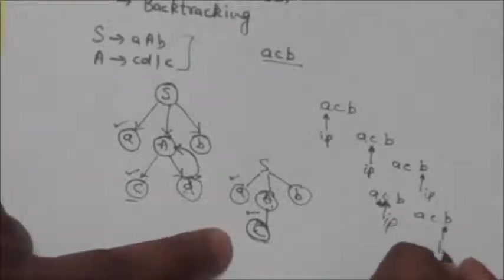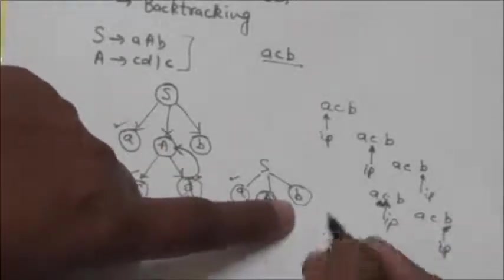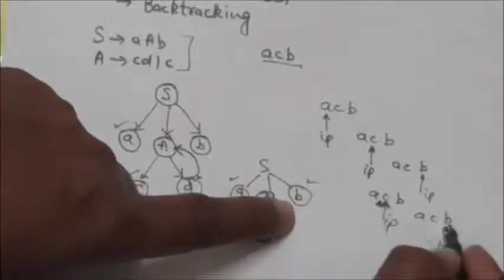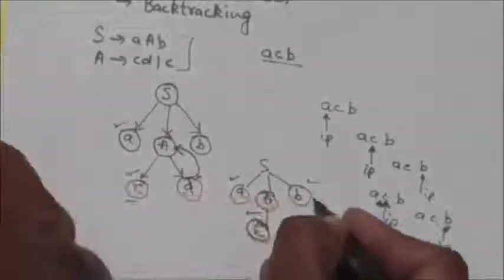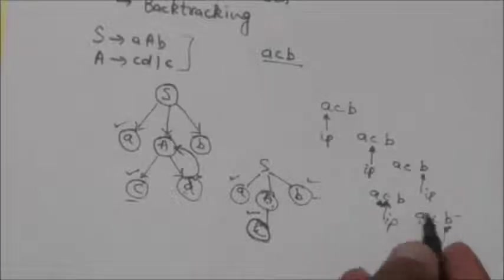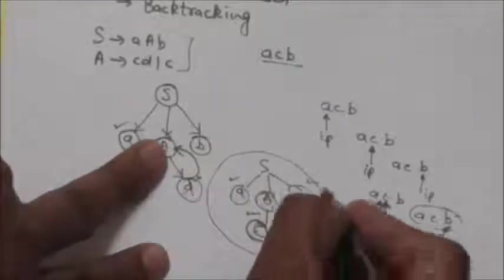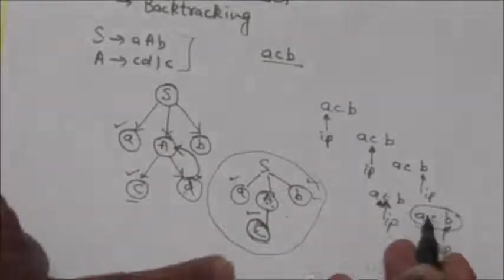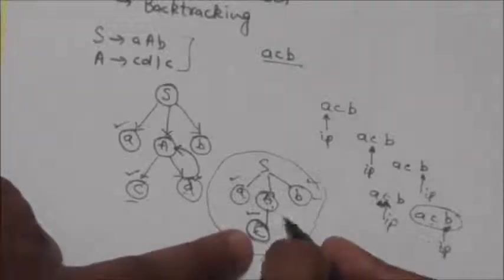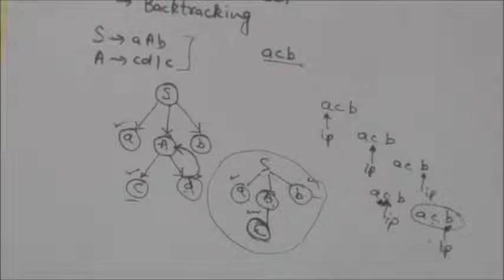The input pointer moves one position to the right. The next leaf of the tree is 'b' and the input pointer also points to terminal 'b', so there is a match. The string is now finished. The recursive descent parser has constructed the parse tree for the string of terminals 'acb', meaning this string is syntactically correct. This is how the recursive descent parser uses backtracking to do syntax analysis — but it also has a drawback.